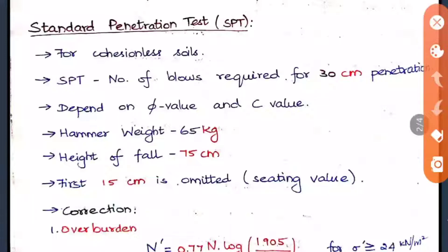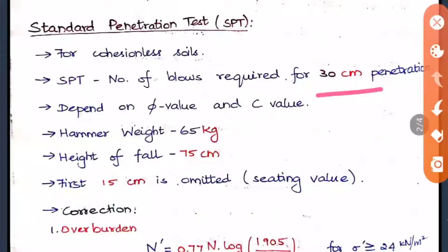The Standard Penetration Test (SPT) is generally done in cohesionless soils and gives an idea about relative density. A hammer is applied over the soil and the number of blows required for 30 cm penetration is taken as the N value. The hammer weighs 65 kg and is dropped from a height of 75 cm. The first 15 cm of penetration is omitted as a seating value, and only the next 30 cm penetration blow count is recorded.